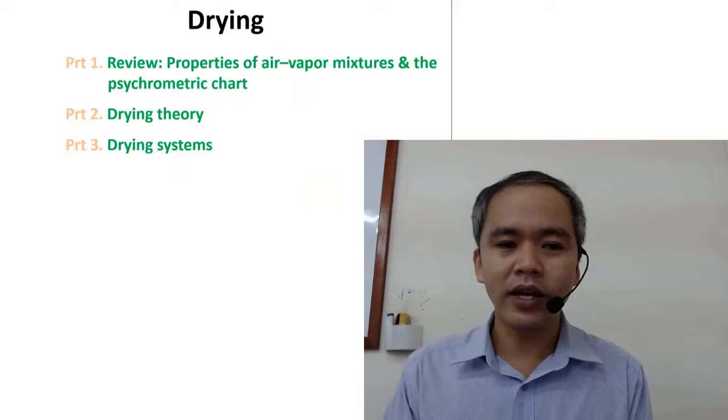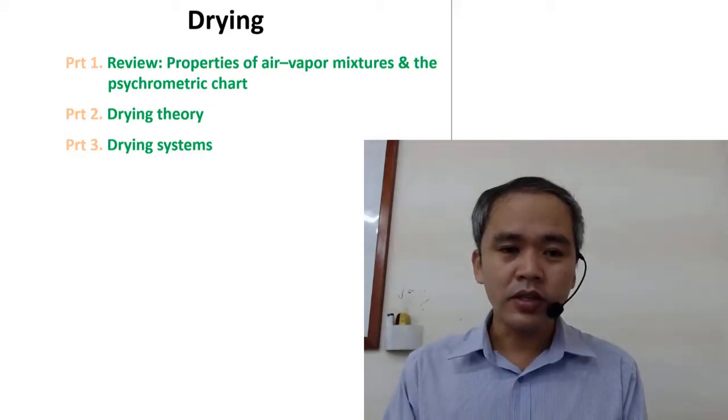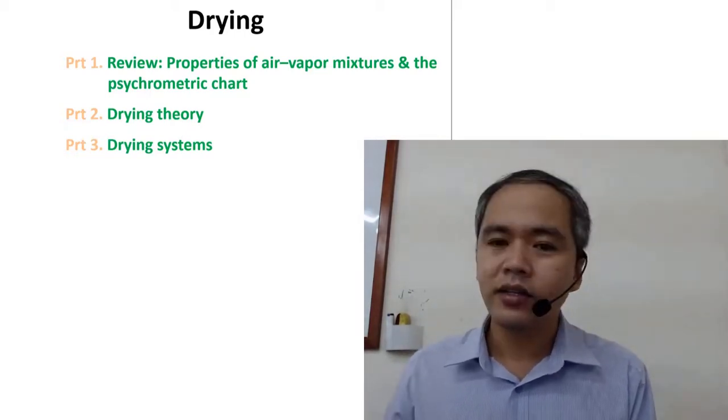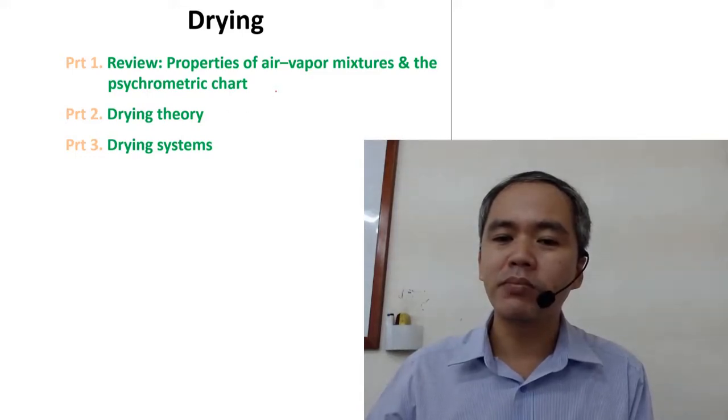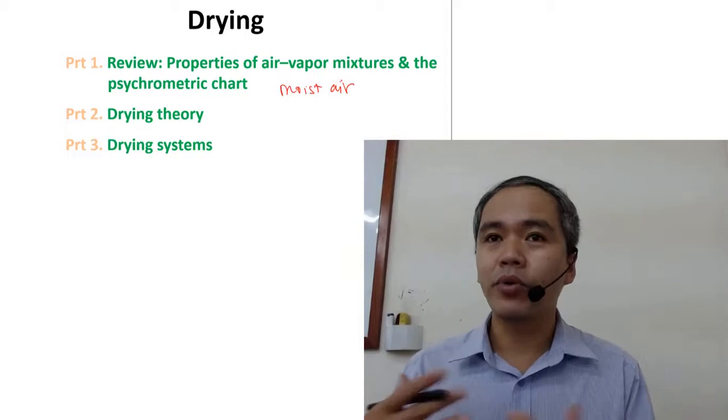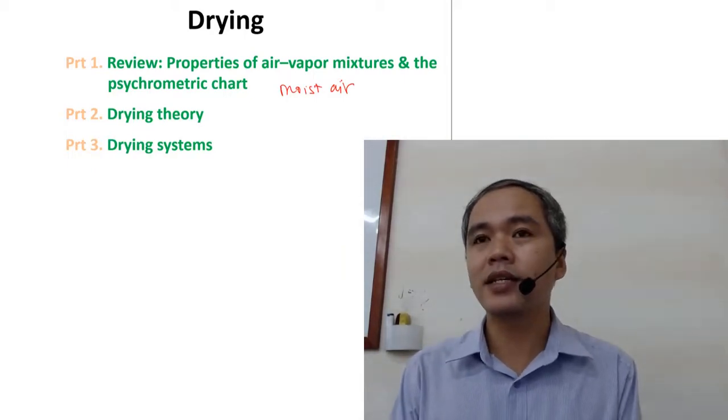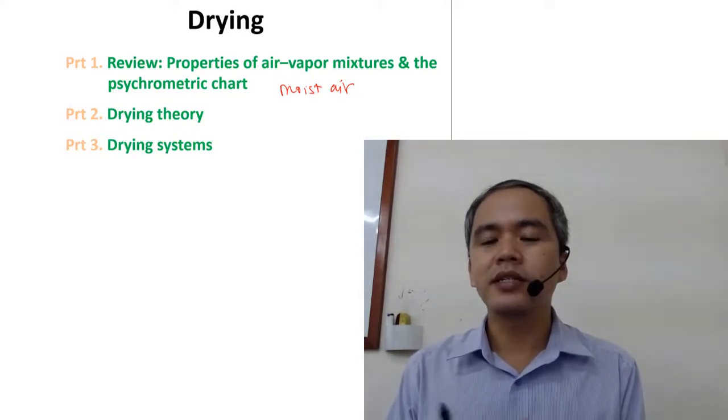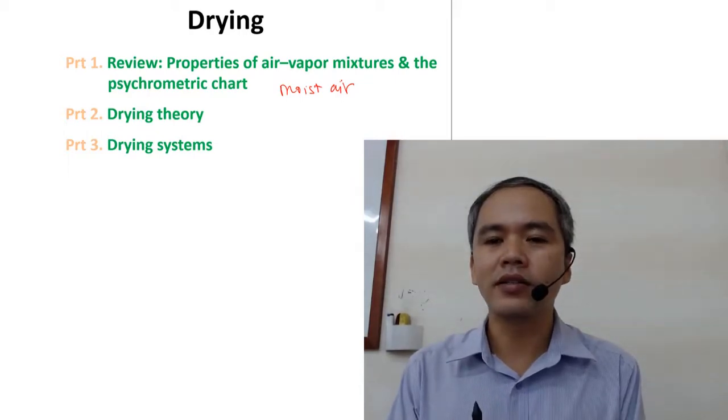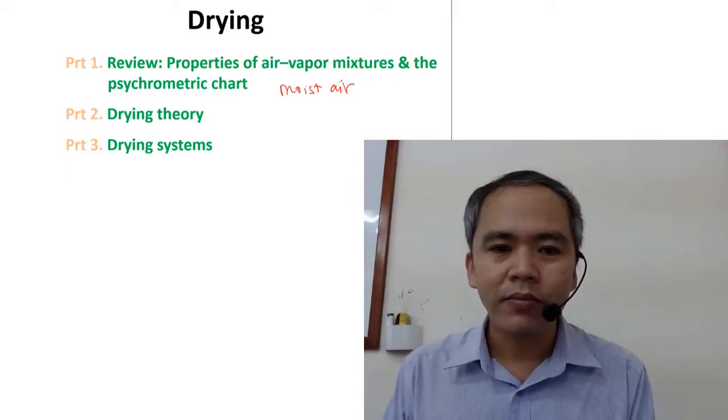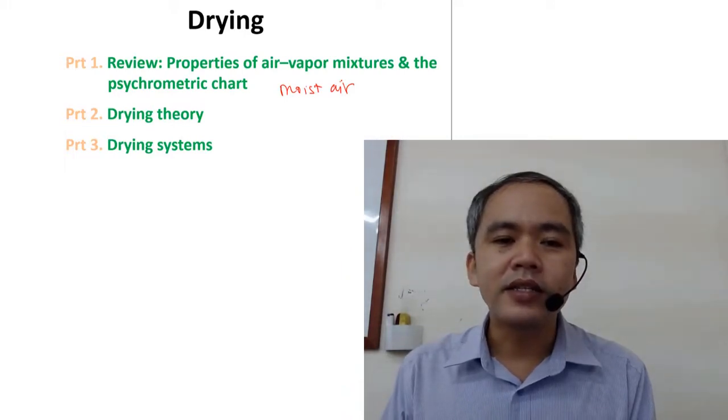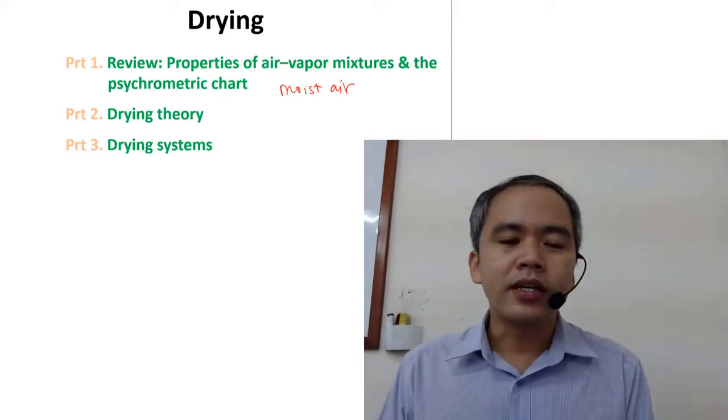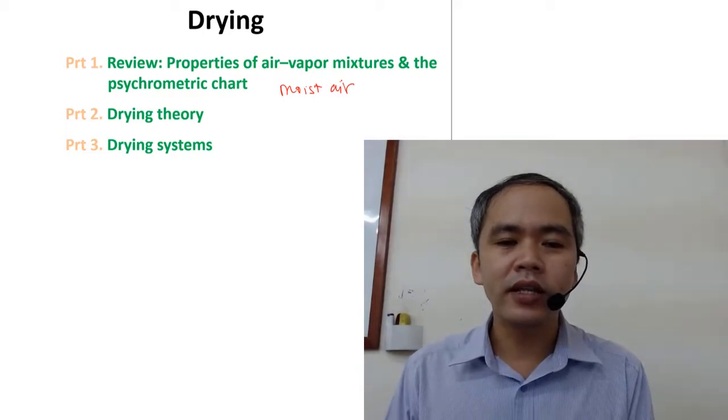In this chapter we have three major parts. The first one, we review the properties of moist air - the mixture between air and vapor. We call this moist air, the air we are breathing now, because it contains some amount of vapor inside. We study the properties because drying is based on the properties of moist air. Then we review how to read the psychometric chart, which you already studied. The second part, we discuss the theory of drying.